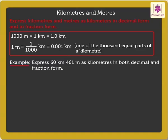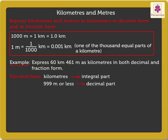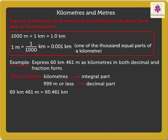Firstly, we shall express it in decimal form. In decimal form, KILOMETERS form the integral part and METERS, which are 999 or less, form the decimal part. Thus, 60 is the integral part and 461 is the decimal part. So, 60 KILOMETERS and 461 METERS is expressed as 60.461 KILOMETERS as a decimal.